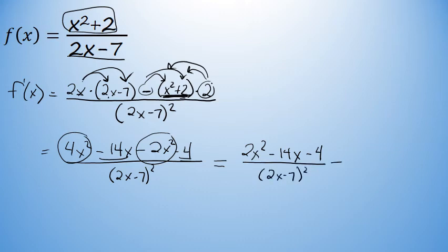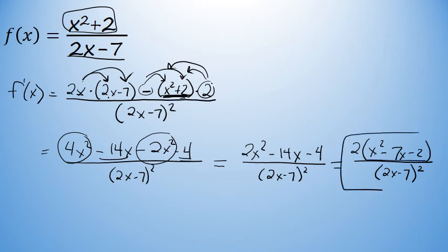Again, the simplest form of an answer is usually the factored version, and I'll finish this answer up by factoring a 2 out to the front of the numerator. And that leaves me with 2 times the quantity of x squared minus 7x minus 2, all over 2x minus 7 squared. Inside the parentheses, x squared minus 7x minus 2 cannot be factored any further. I'll call 2 times the quantity of x squared minus 7x minus 2, all over 2x minus 7 squared, my final answer.